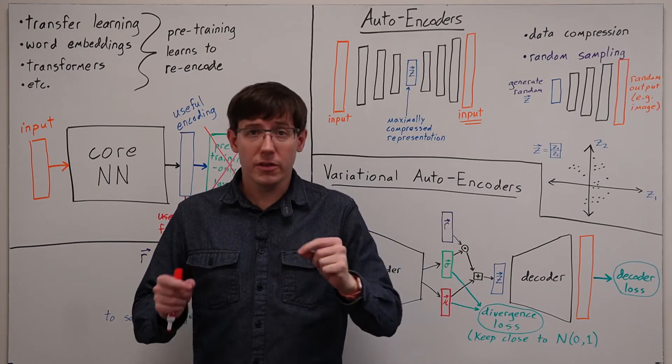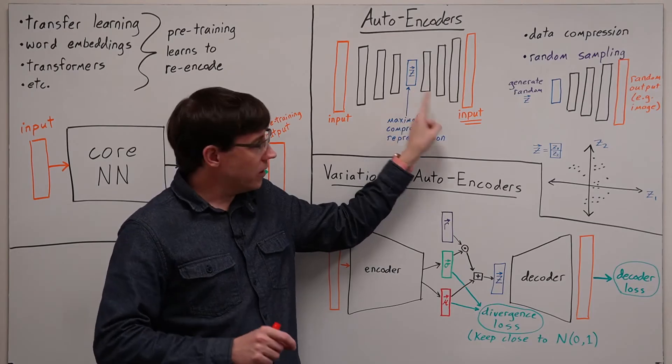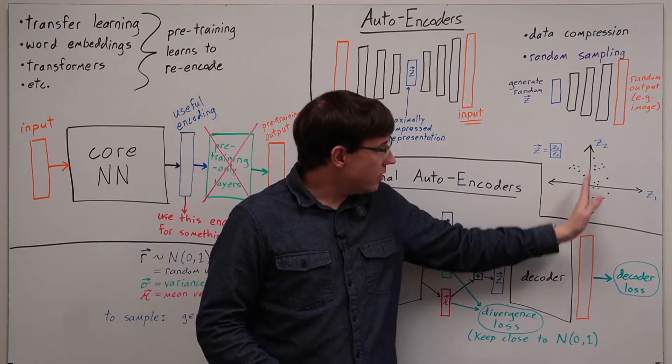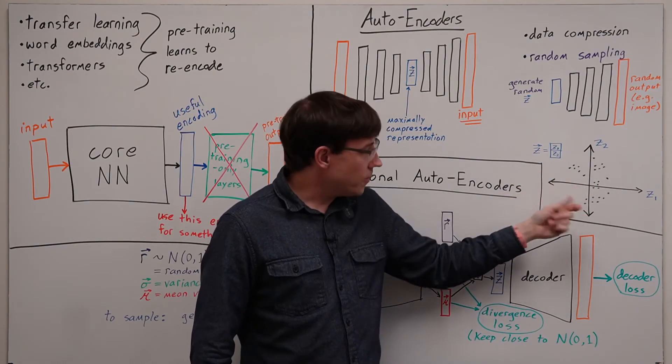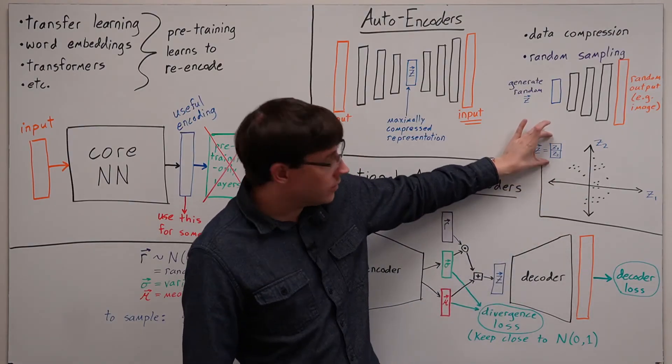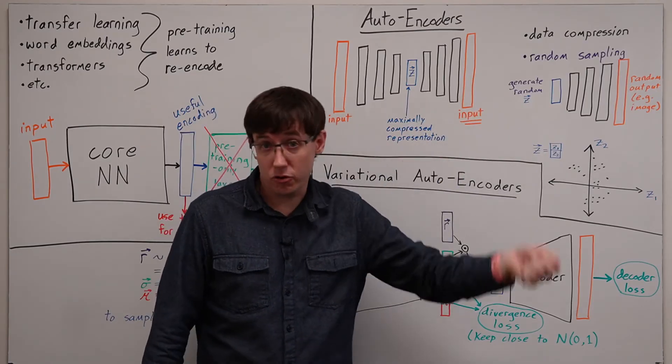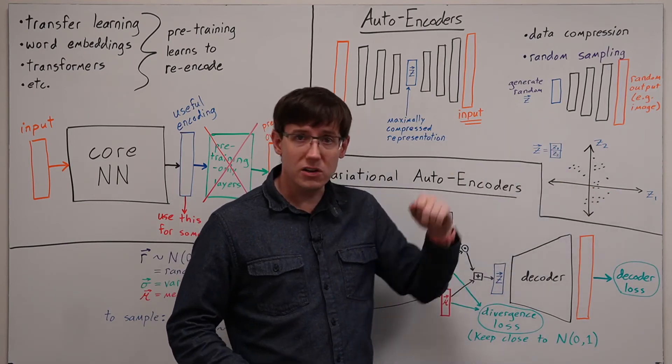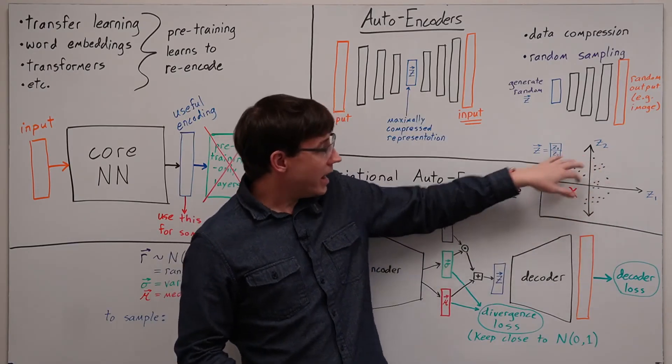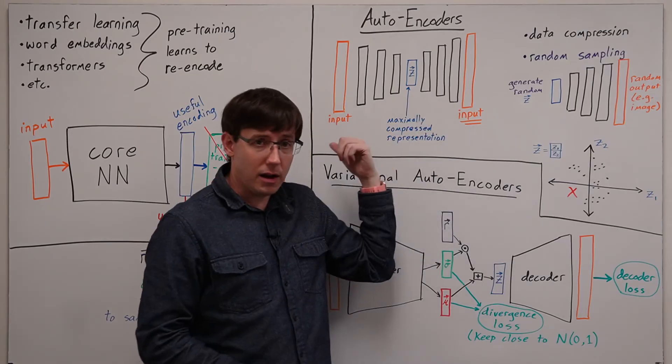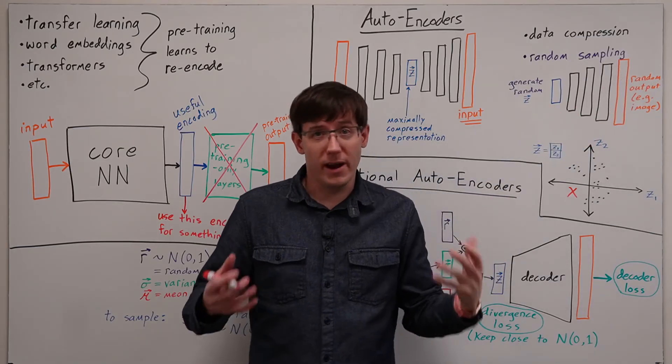To build some intuition for this, think about the oversimplified case where this smallest hidden layer is just two neurons, where we can then plot the values of those two neurons. And if the black points are all of the values that we got for these two neurons when we passed the data through after training, if we were to randomly generate a vector, we could end up somewhere over here that's not anywhere near the data from the data set. So when we pass this through the decoder, the output is probably just going to look like random garbage.